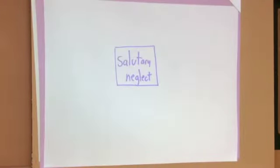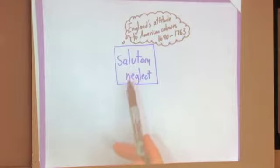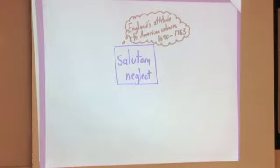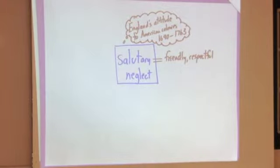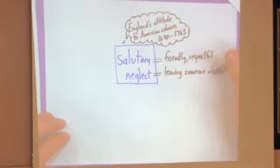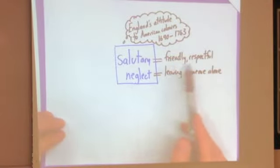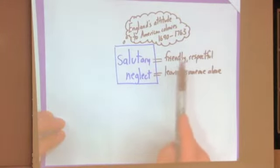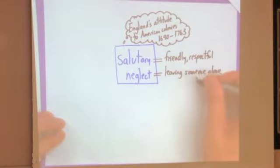Salutary neglect. That's the term we give for the policy that England had toward the colonies in the 1700s. So, that was the term for England's attitude until exactly the year 1763. Things changed in 1763, and before 1690 there were some different attitudes as well. But for that long period of time, salutary neglect is how England treated the colonies. Salutary meaning friendly, like respectful, like if you saluted somebody. Neglect means leaving someone alone. So when you put these together, you get someone, in a friendly and respectful way, leaving someone alone. England's attitude was friendly, respectful, and leaving those colonies basically on their own for that range of time.